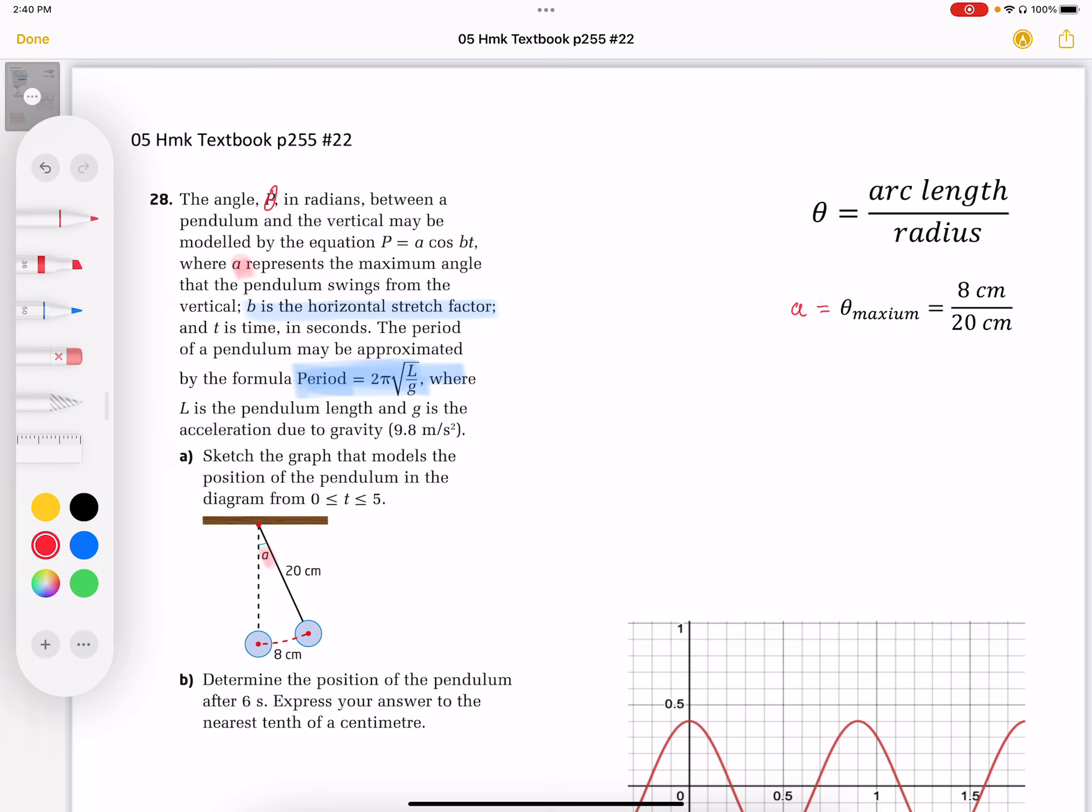So that theta is the angle, and that's what the equation is going to be equal to here. So that P value is the angle made between that vertical line and the pendulum swinging back and forth.